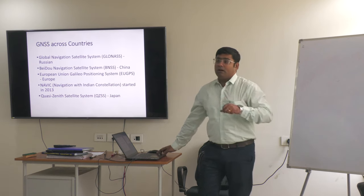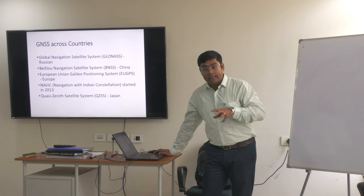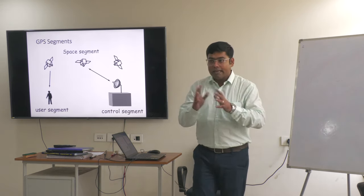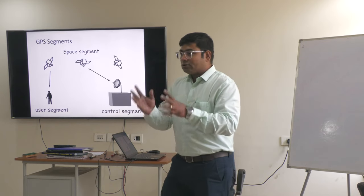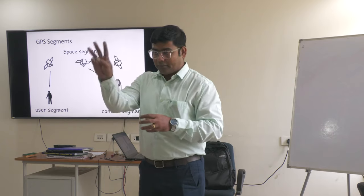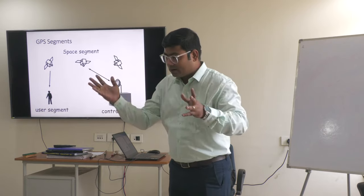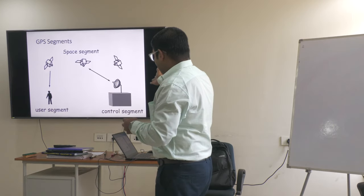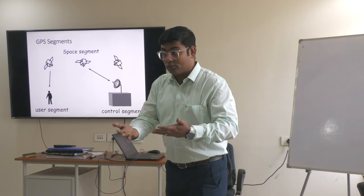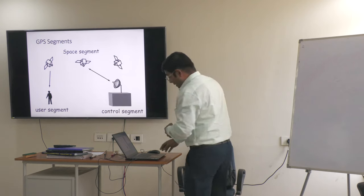To understand the working principle of GNSS, we have to look at the segments of GPS. In Global Positioning Systems, there are basically three segments. The first segment is the space segment — the satellites. The second segment is the control segment. And the third segment is the user segment — we are the users. I am going to discuss them one by one.